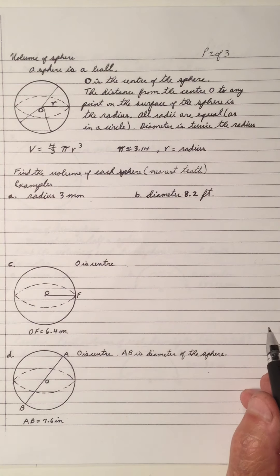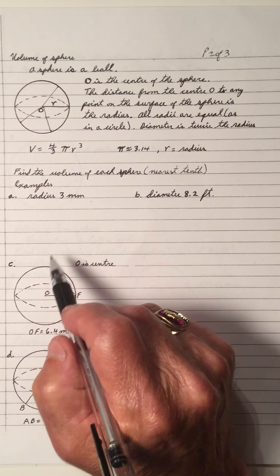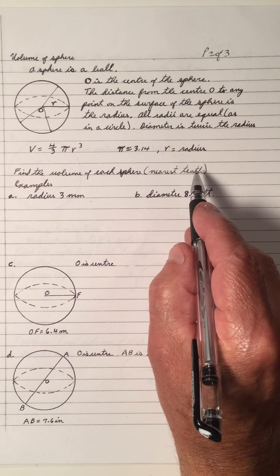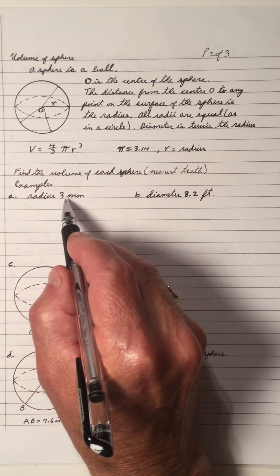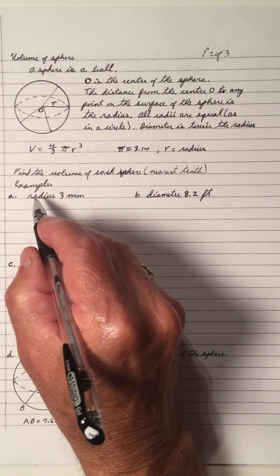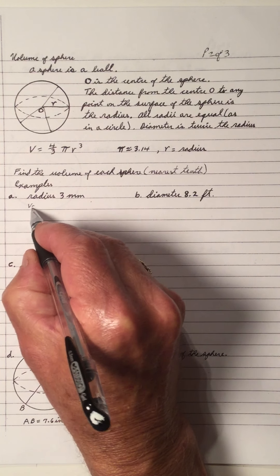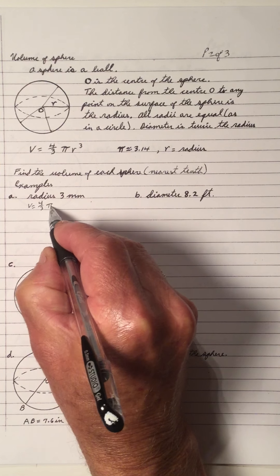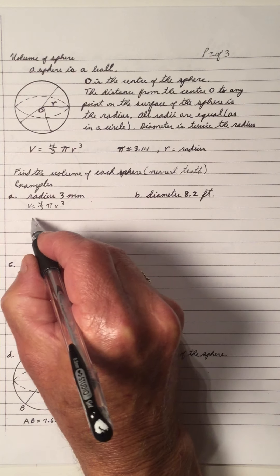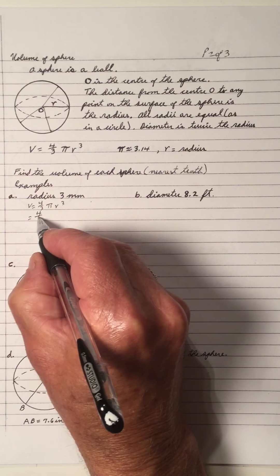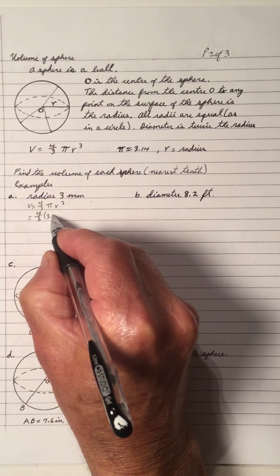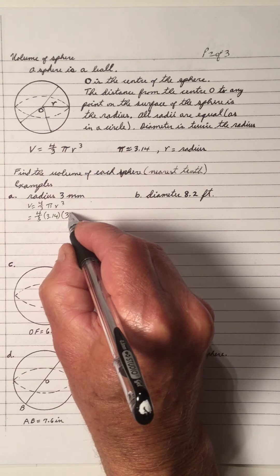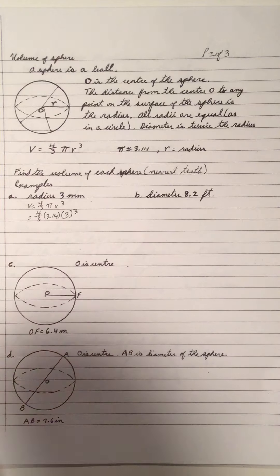Let's work out some volumes — I've got some examples down here. I want to round them to the nearest tenth. The first one, A, has a radius of 3. So V equals 4 over 3 pi R cubed. That's 4 over 3 times 3.14 times the radius 3 in brackets, cubed.